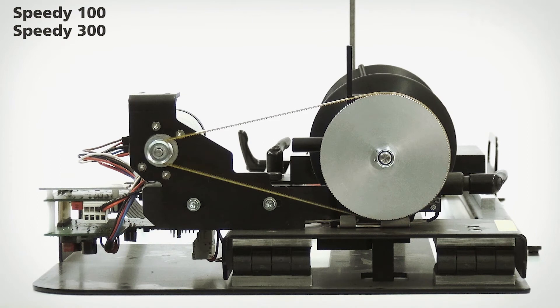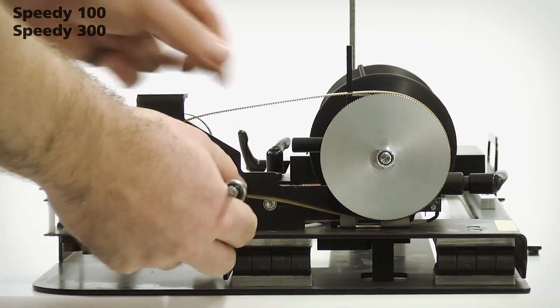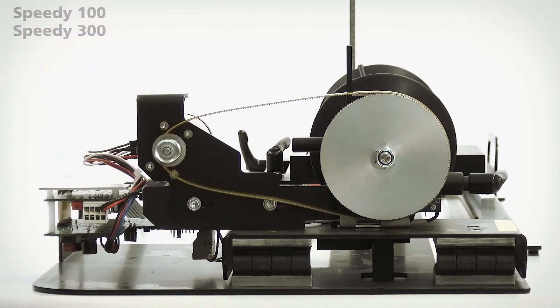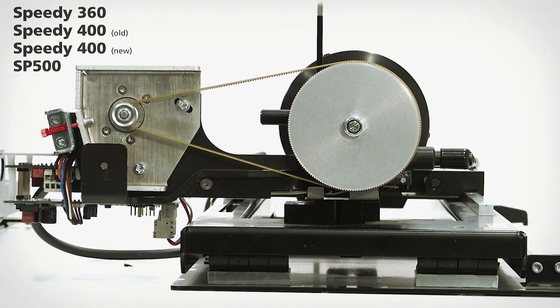First we need to loosen the belt tension. On the Speedy 300 we have to loosen these two screws. On the Speedy 360 we first need to remove the belt tensioning screw and then these two screws.